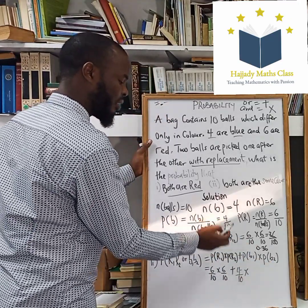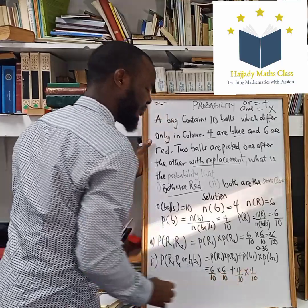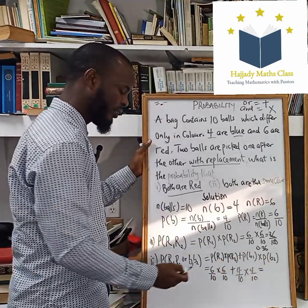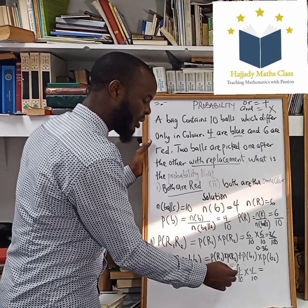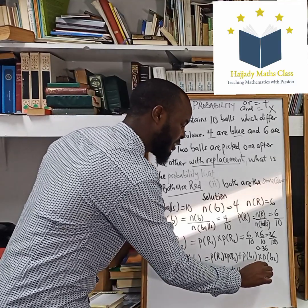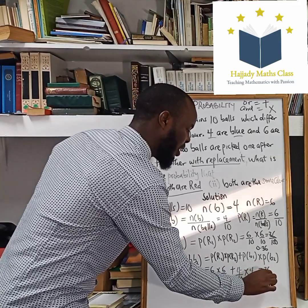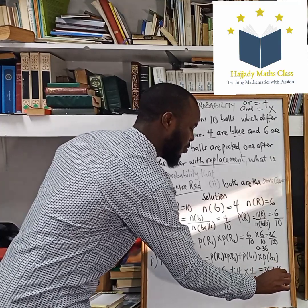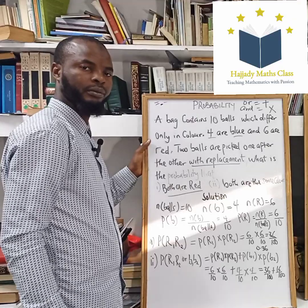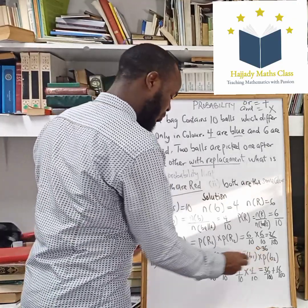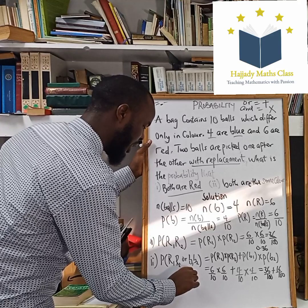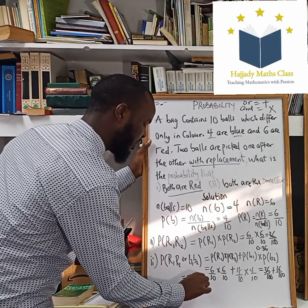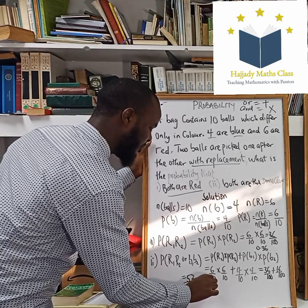This is going to be: 6 times 6 over 10 times 10 is 36 over 100, plus 16 over 100. Adding these two together, we get 52 over 100, which is the same as 0.52.